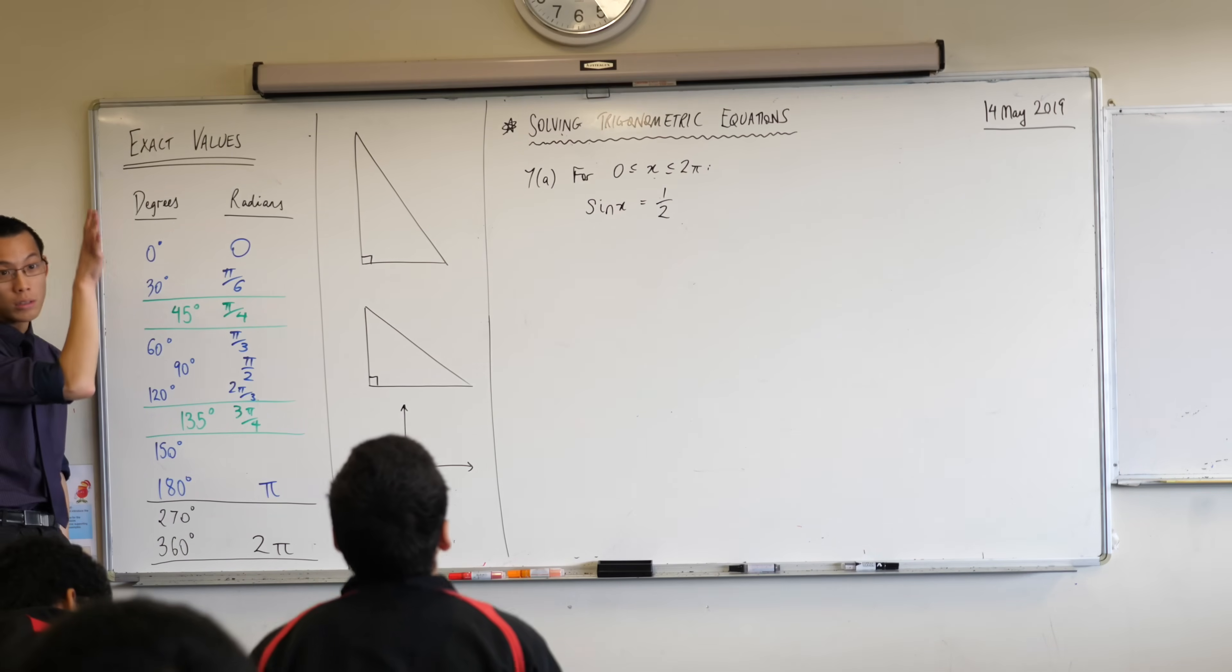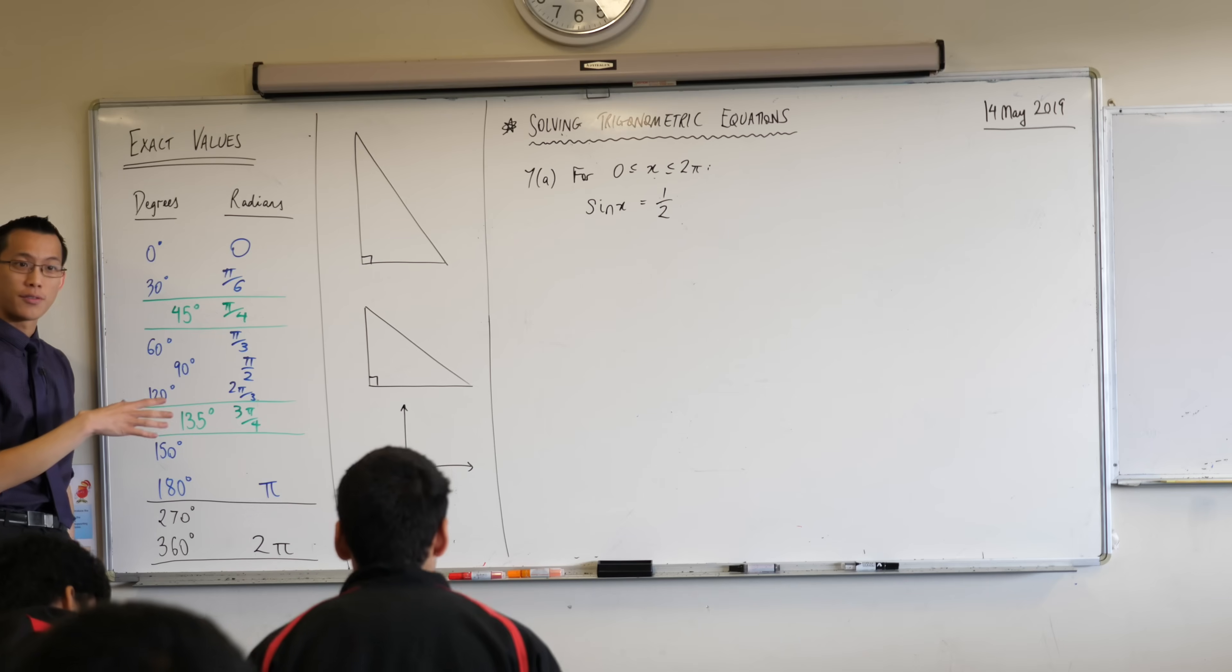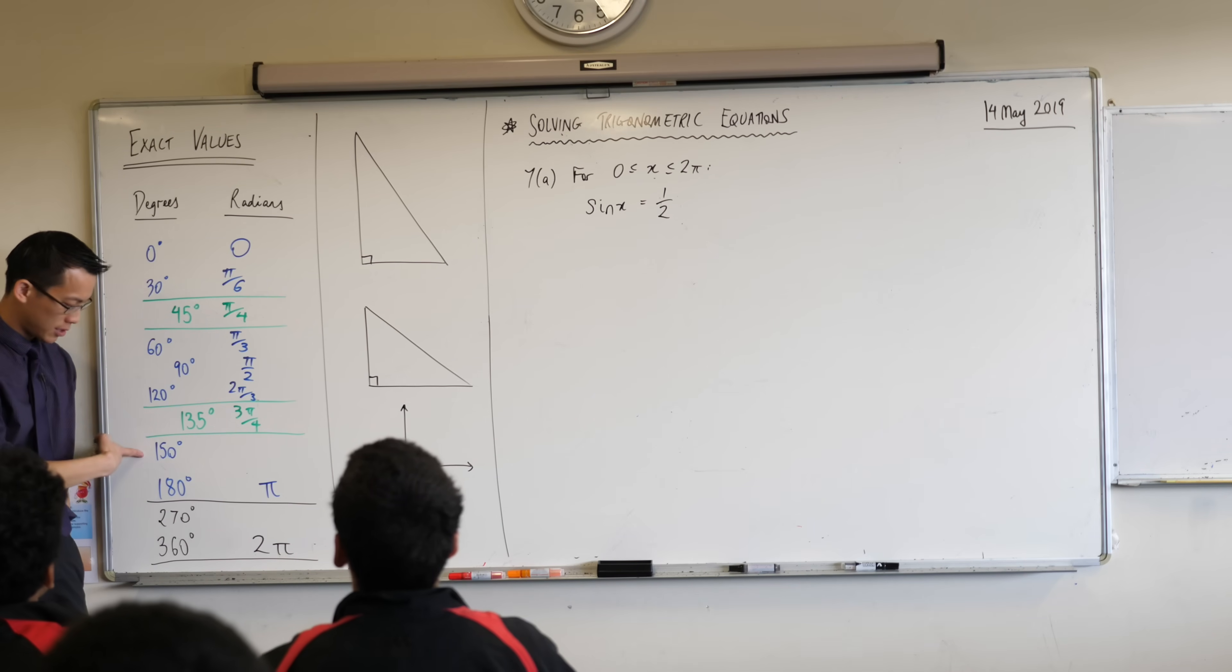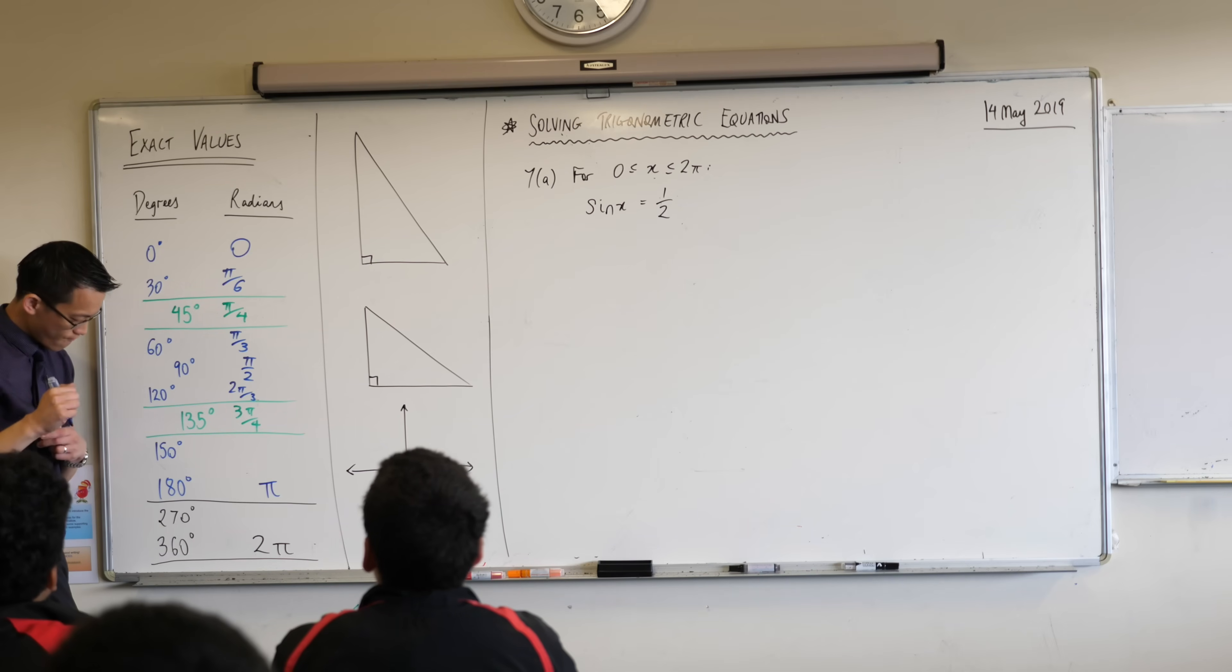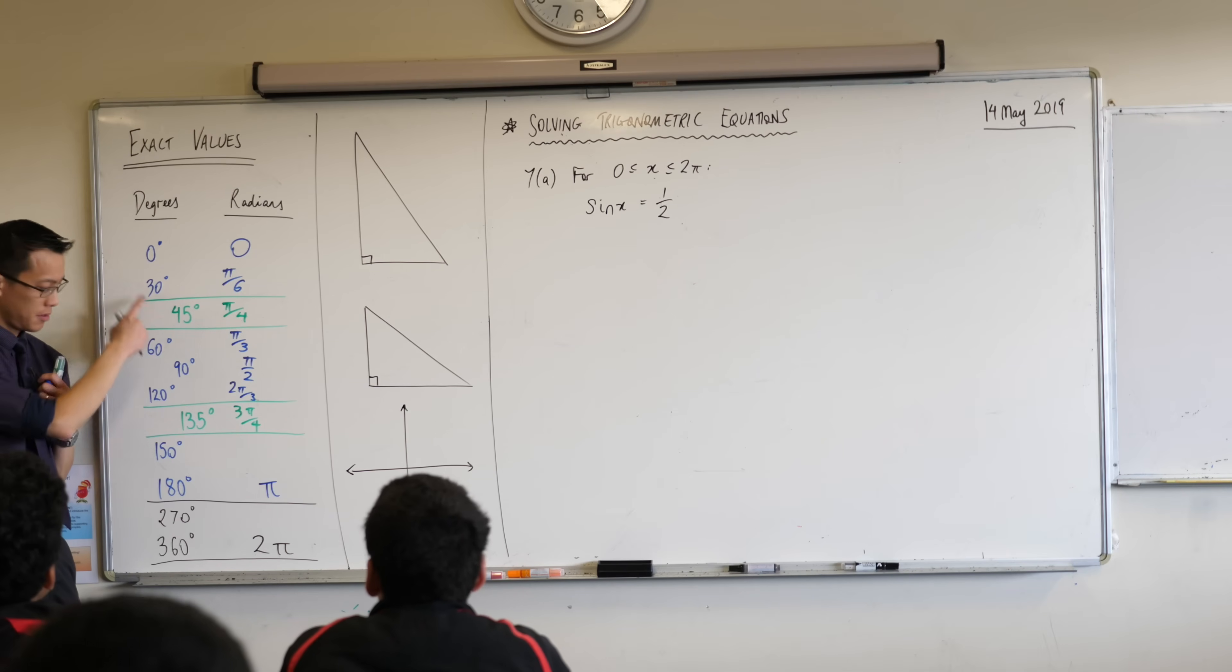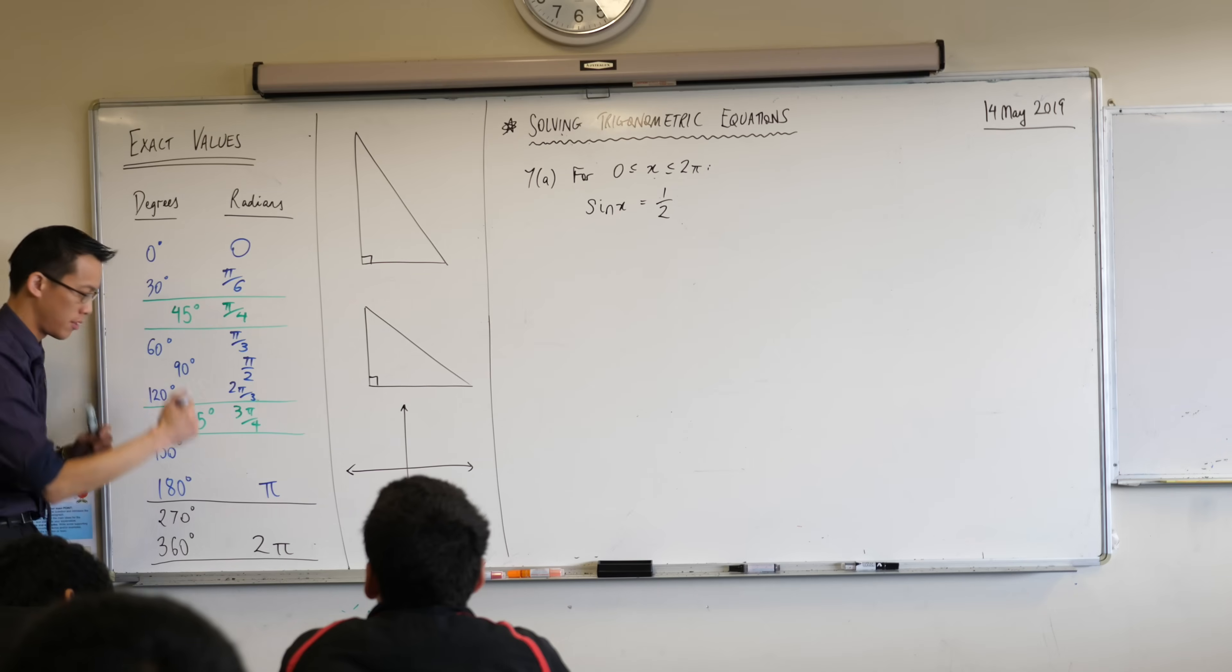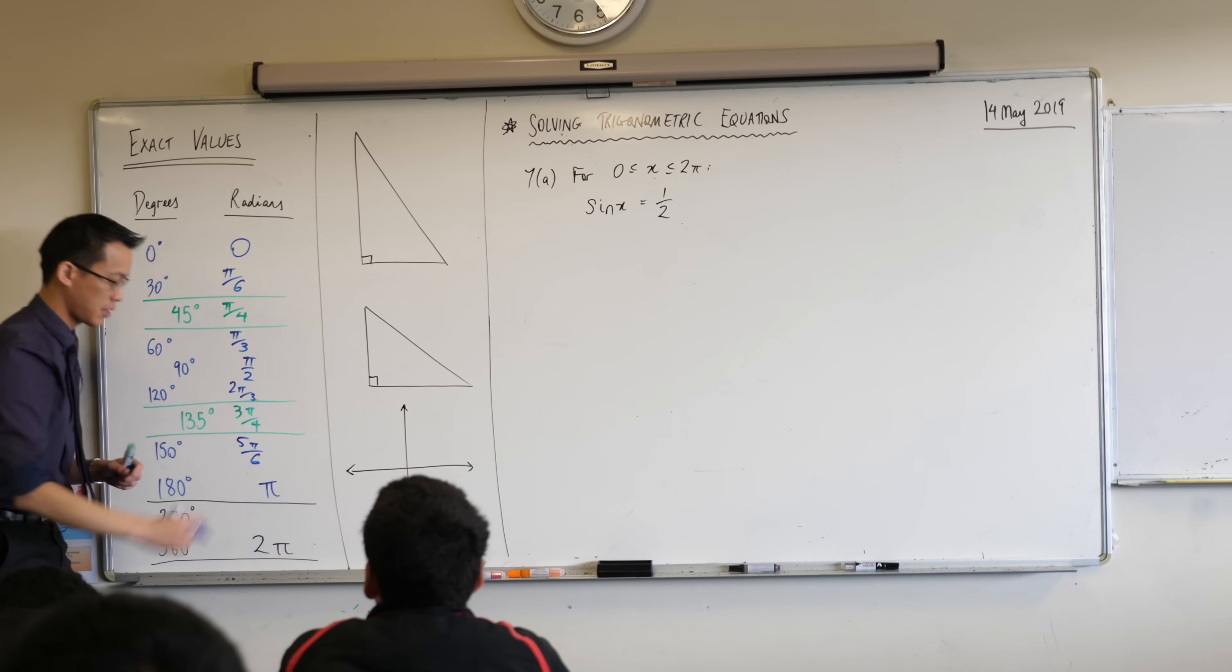I'm doing all of the lots of 30 and all of the lots of 45 all the way up to 180 so my last stop here is 150 degrees. The difference between 180 and 150 is 30 right? So it's one of these take away one of these. It's going to be 5π/6 or if you like five lots of that.